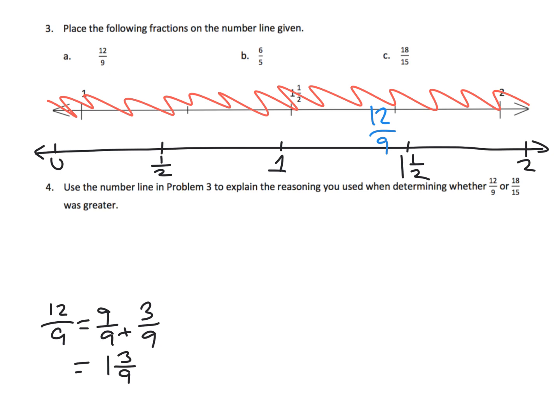And then let's just jump straight to 18 fifteenths, because that's what we're supposed to compare. So 18 fifteenths, I'm going to think of that as 15 fifteenths plus 3 fifteenths. So that's really 1 and 3 fifteenths.